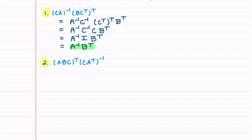Let's now look at our second example. In this one, we also have two expressions, so again we'll work from left to right. In our first one, we have three matrices that are multiplied and we're taking the transpose. We're going to do this just like we would if we had two matrices — we're just going to reverse all of the orders. So this gives us C transpose, B transpose, A transpose. And then on the right, we have the inverse, so we have to reverse those. So we first have A transpose inverse and then C inverse. This gives us C transpose, B transpose.